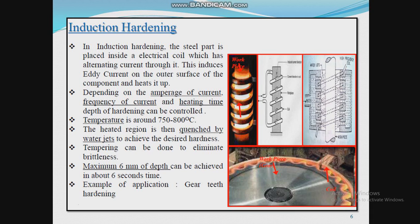First, induction hardening process. In this process, heating steel or cast iron by means of high-frequency electric current is termed induction hardening. The main principle is that when a component is placed in a varying magnetic field, an eddy current is induced in it. This eddy current is used to heat the component. The component heated by induction is then quenched, forming a thin hardened layer on the surface of hardenable steel or cast iron.